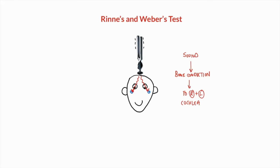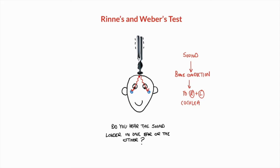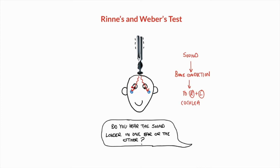In a patient with normal hearing where the inner ear is working as it should, the sound vibration through the bone will reach the cochlea equally on both sides and will therefore be heard the same on both sides. When you ask the patient whether they hear the sound equally in both ears or loudly towards one side, a patient with normal hearing will describe hearing it equally in both ears and will often sense that sound as centrally in the middle of their head.